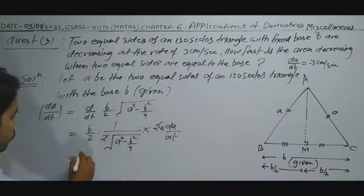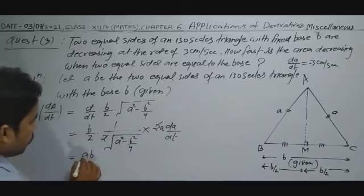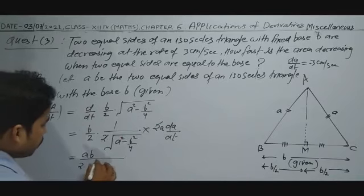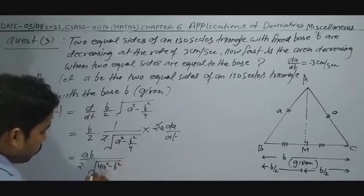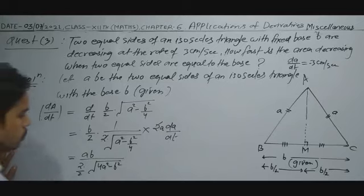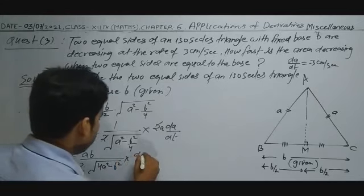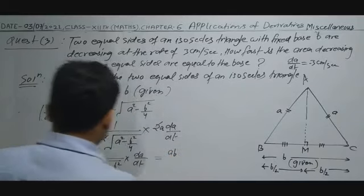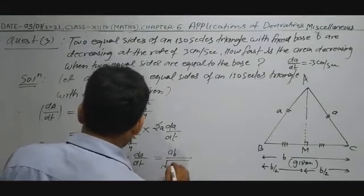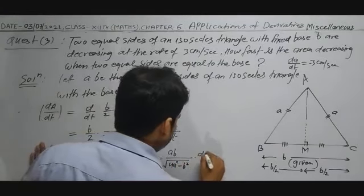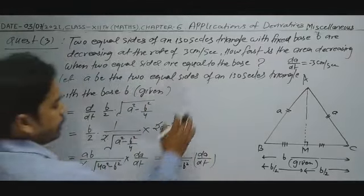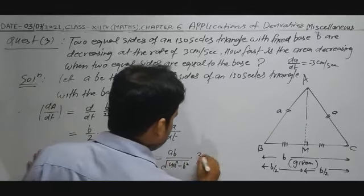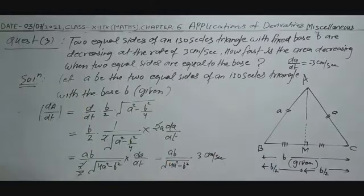Simplifying: the 2s cancel, giving dA/dt = (aB) / (2√(a² − B²/4)) × da/dt. This can be written as dA/dt = AB / √(4a² − B²) × da/dt. Since da/dt = −3 cm/s, this is substituted in.